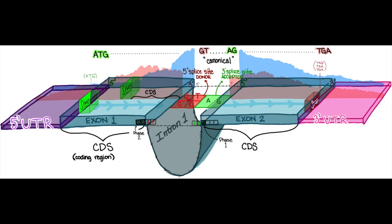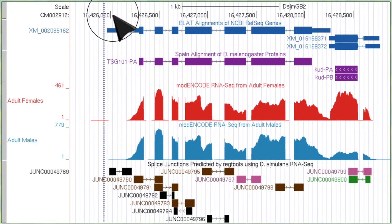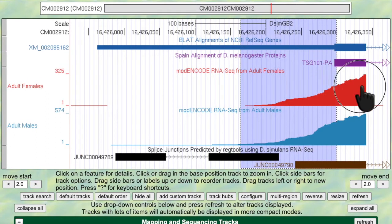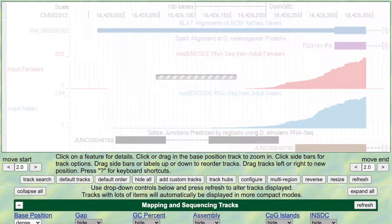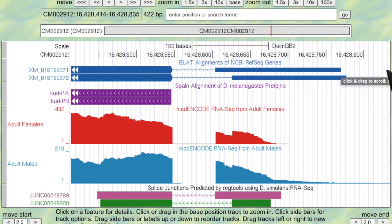The 5' and 3' UTRs, or untranslated regions, that flank each gene just before and after their start and stop codons will also be included in the RNA-seq reads since they're still transcribed for regulation of expression. However, being that they're at the ends of the RNA molecules, these regions are naturally very unstable and prone to degradation — which explains why we get this tapering off at each end.